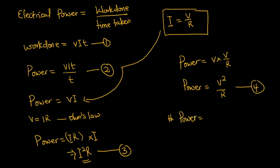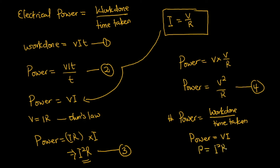To summarize: electrical power equals work done over time taken, W/t. That means P = VI. Using Ohm's law, you can also derive P = I²R and P = V²/R. With this basic introduction to electrical energy, work done, and electrical power, let's look at some examples to see how to apply this knowledge in solving real-life problems.